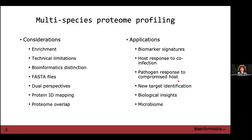This can be used for new target identification. If you want to identify a new target to inhibit to weaken a pathogen or help clear the immune system, doing the two-perspective approach allows you to do that. It's also valuable for more foundational biological insights.